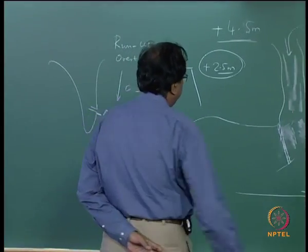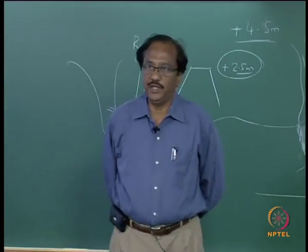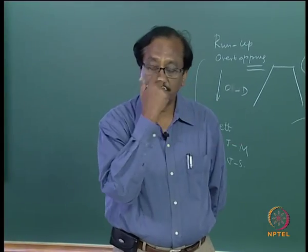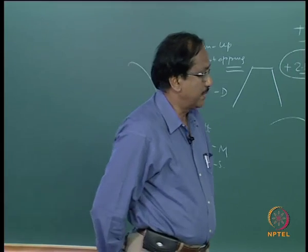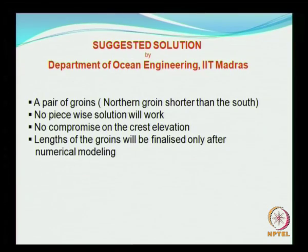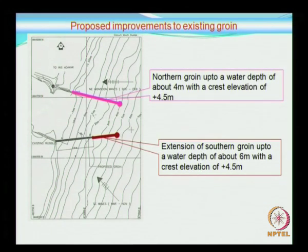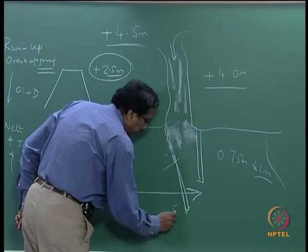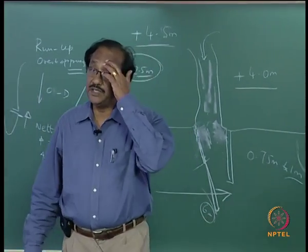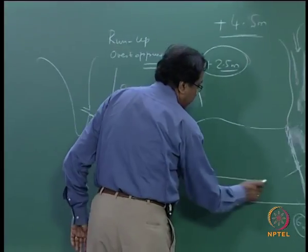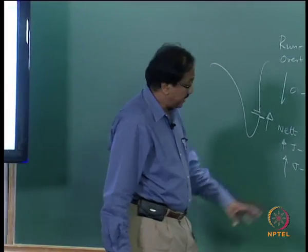This is based on our experience with the northern groins constructed for the north of Chennai harbor. The length of the groins should be finalized only after numerical as well as physical model study. The northern groin can be extended up to a water depth of 4 meters with a crest level of 4.5 meters, and the southern groin will certainly be longer, extending up to a water depth of 6 meters, to intercept the huge sediment transport moving northward.